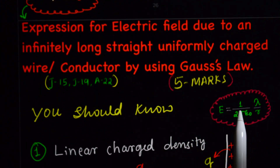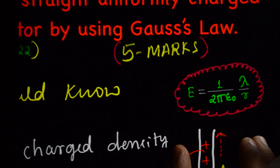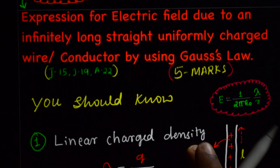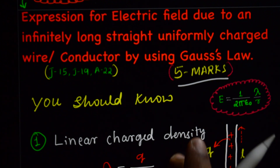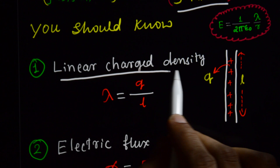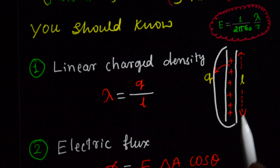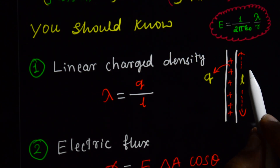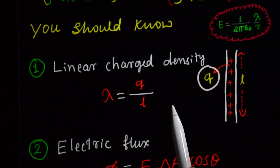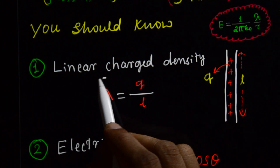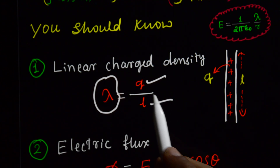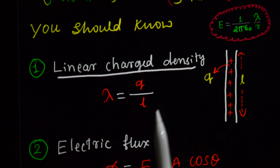To arrive at this equation, we should know a few things. This is a 5-mark topic. First, we need to know linear charge density. Suppose this is our conductor of length L, with charge Q distributed on it. The linear charge density λ is equal to the charge divided by the length: λ = Q/L.